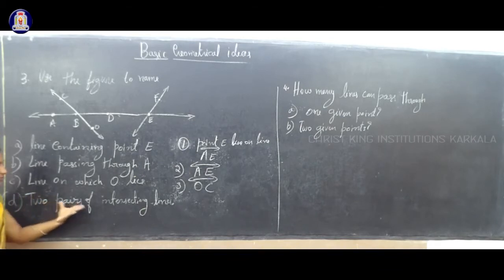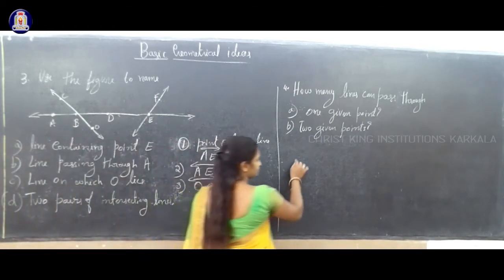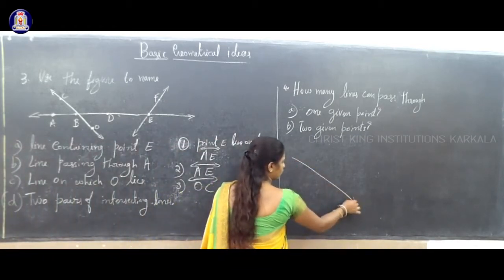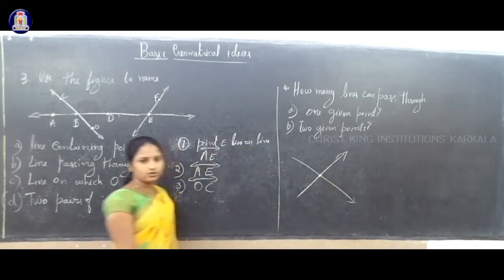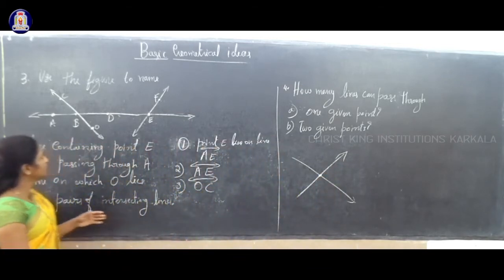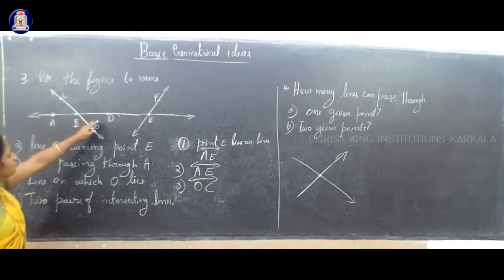Last question: two pairs of intersecting lines. Intersecting lines means one line crosses another line, so they will intersect at one point. We can see the two lines are intersecting.